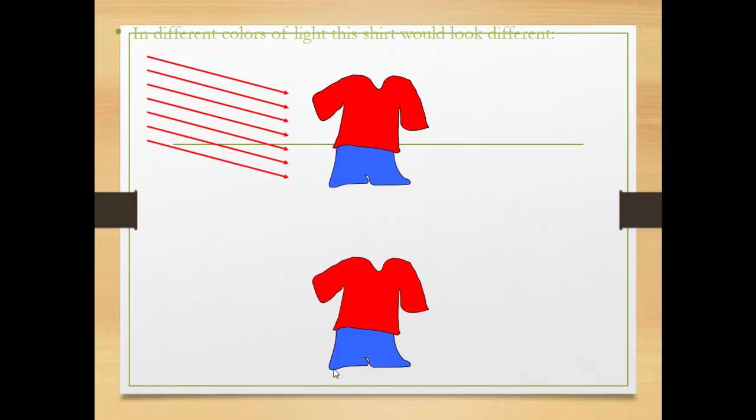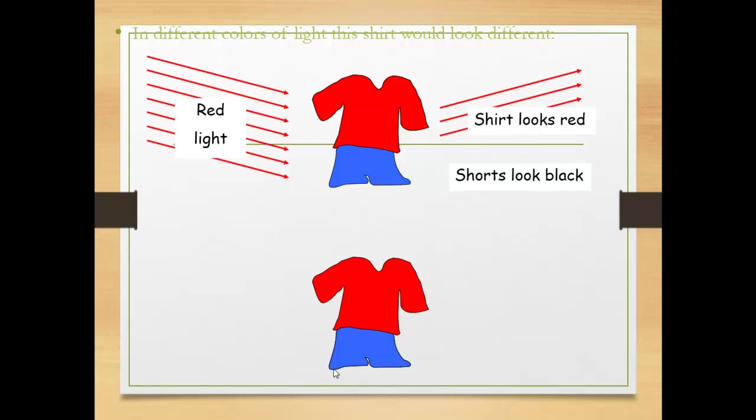Here, when the red color falls on a red shirt, it reflects red color for the shirt. But for the shorts, it reflects black.